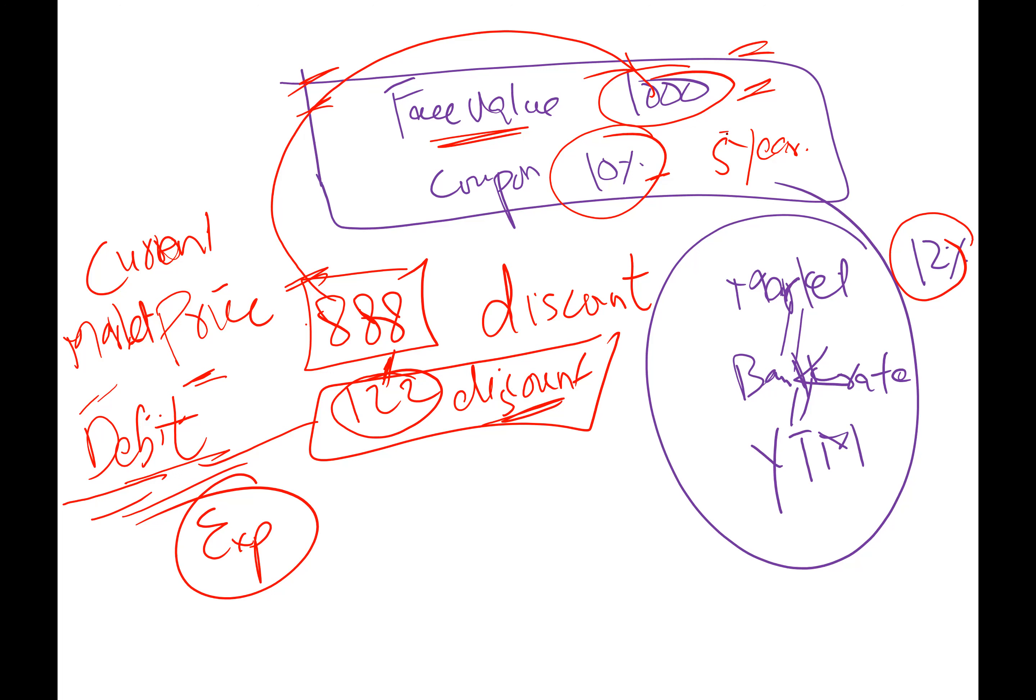So at the end of the maturity of five years, company will pay back the bond holders not $888,000 because the face value is $1000. This is called bonds issued at discount.